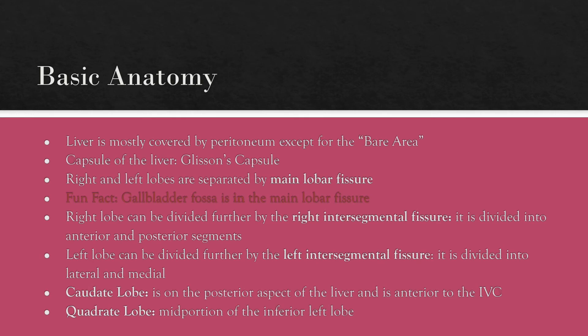The liver is a pretty big organ — it's actually our largest organ in the abdomen, and it's located in the right upper quadrant. The stomach can be found posterior and lateral to the left lobe of the liver. The duodenum is medial to the right lobe, and the body of the pancreas can actually be seen just inferior to the left lobe, which explains why we can sometimes use the liver as a window to see the pancreas. The liver is almost fully covered by peritoneum, except for one area which we call the bare area — a portion of the posterior surface of the liver that is in direct contact with the diaphragm.